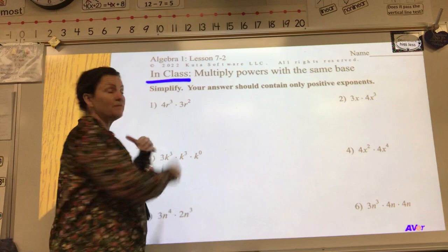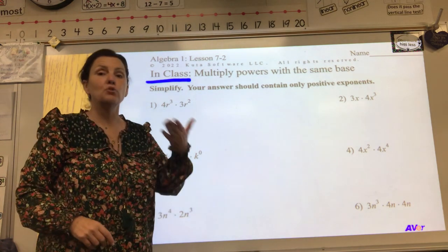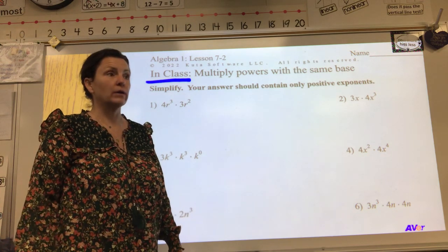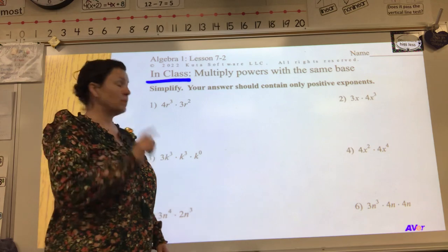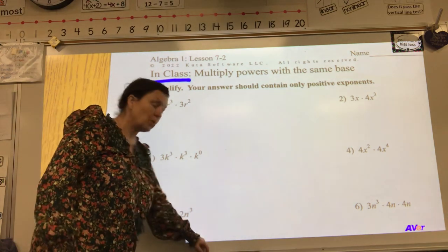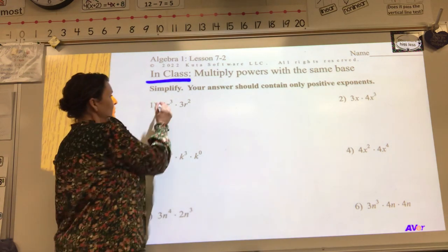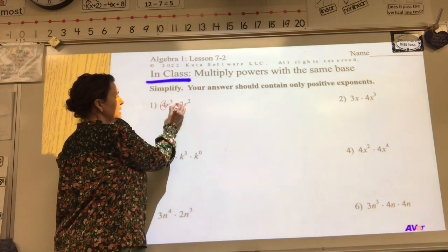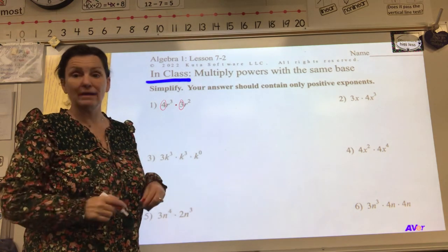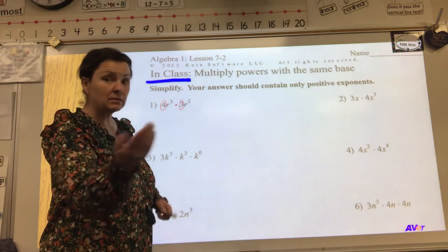So the number in the front has a very fancy name. So this front number is called a numerical coefficient, aka a fancy word for hey, the number in the front. So first thing we do is check out, oh, this is a multiply problem. So when we have numbers in the front, in this case we have a 4 times a 3, the first thing we do is multiply those two coefficients. So 4 times 3 is 12.